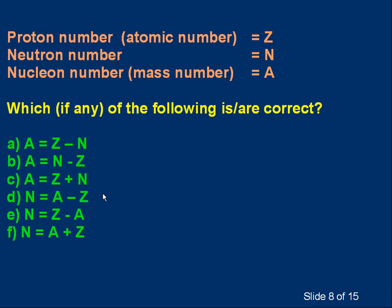Here's an exercise — please pause the video, read through it and try to answer it. If you add the number of protons to the number of neutrons, you get the number of nucleons: A equals Z plus N. So equation C is clearly true, which means A and B can't be. We can rearrange equation C to give the number of neutrons, which gives us equation D: N equals A minus Z — the number of neutrons is the number of nucleons minus the number of protons. If D is true, E and F can't be true.